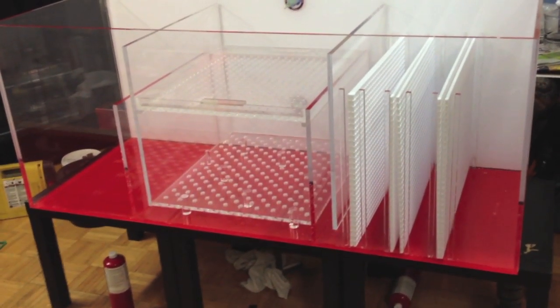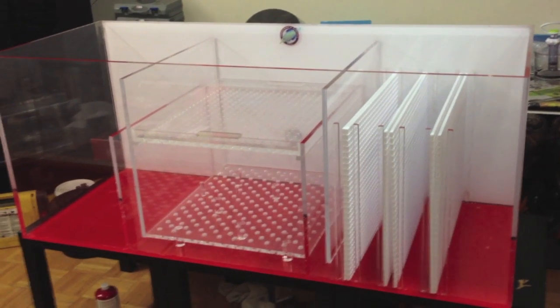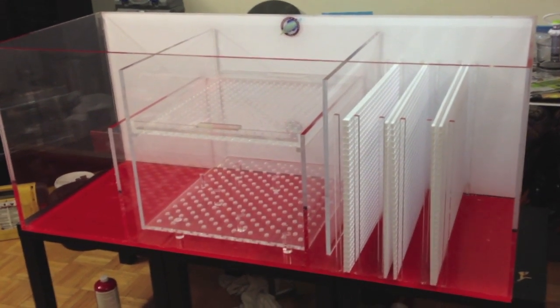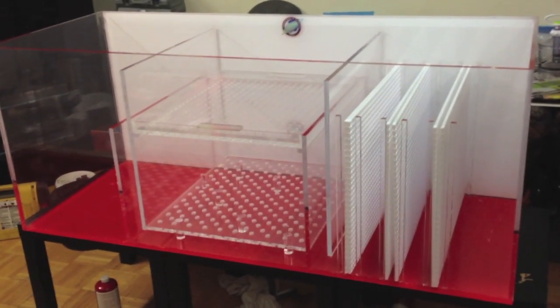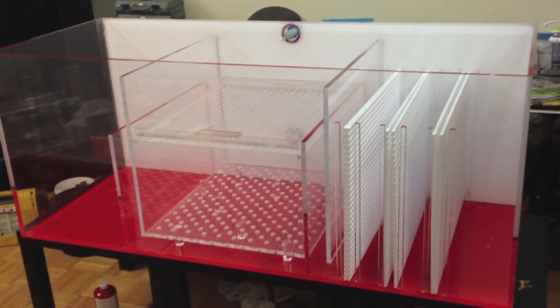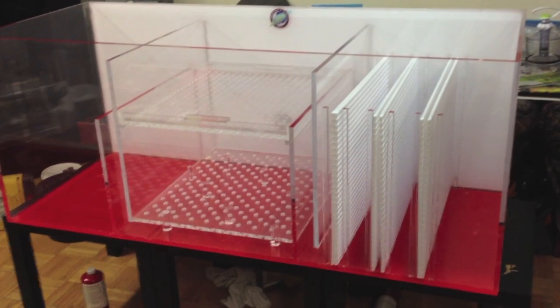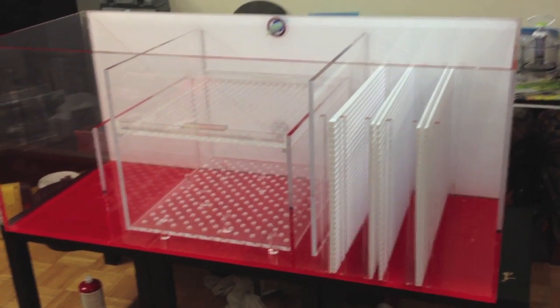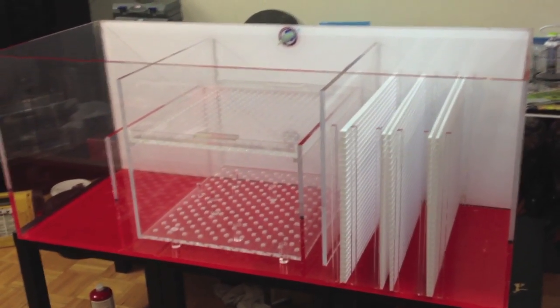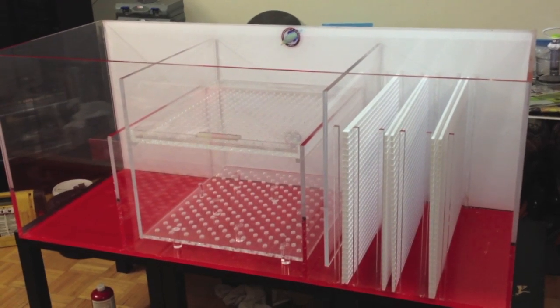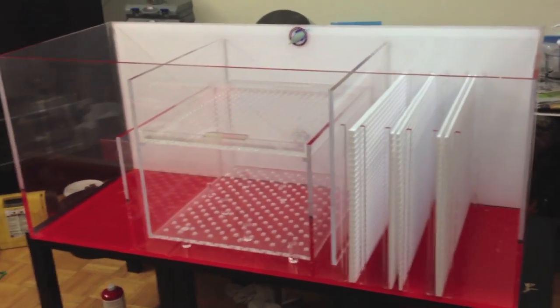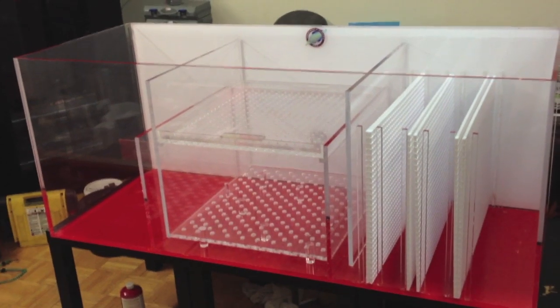So what we have here is a 150 gallon sump. The measurements are 60 inches in length, 24 inches in width, and 24 inches high. Pretty big system. This sump is actually going to be for a saltwater fish-only system that is going to measure anywhere from 800 to 1000 gallons, which is in the works.